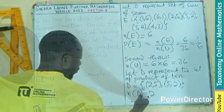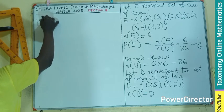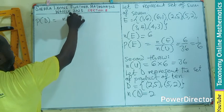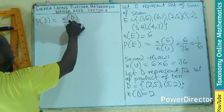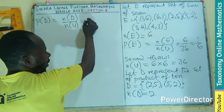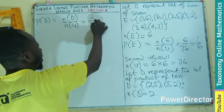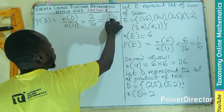So the next is to find the probability of D. So right from here I can say that probability of D equals to number of D divided by the sample space. So we have 2 divided by 36, which is 1 over 18.